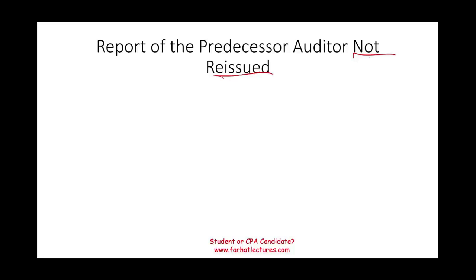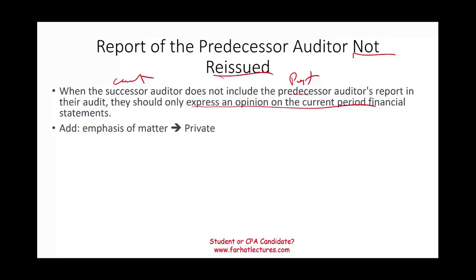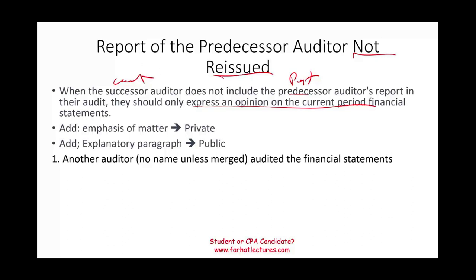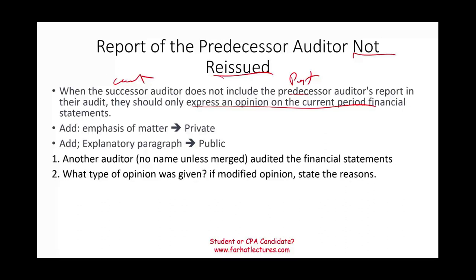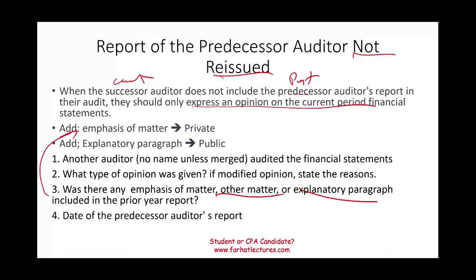What if the predecessor auditor's report is not included — the successor auditor does not present comparative prior-year information from the predecessor? The successor should express an opinion only on the current financial statements, and add an emphasis of a matter paragraph (non-issuer) or explanatory paragraph (issuer) stating that another auditor — without naming them unless there was a merger — audited the prior-period financial statements. That paragraph must describe the type of opinion given, state the reasons if it was modified, and note any emphasis of a matter or explanatory paragraph, along with the date of the predecessor's audit report.